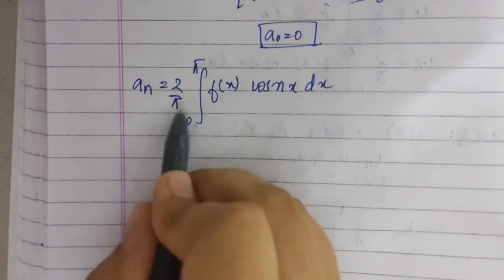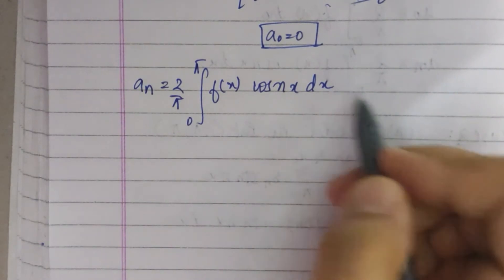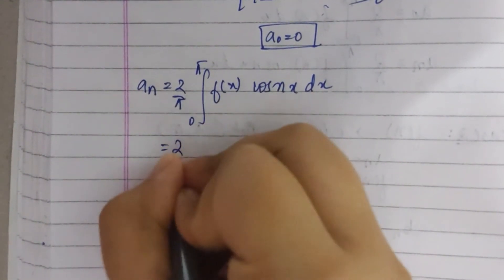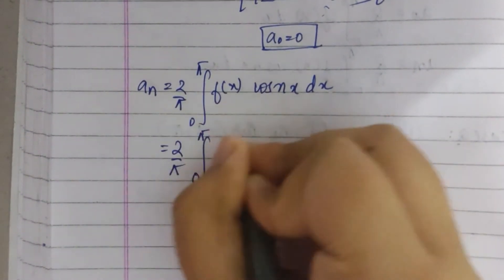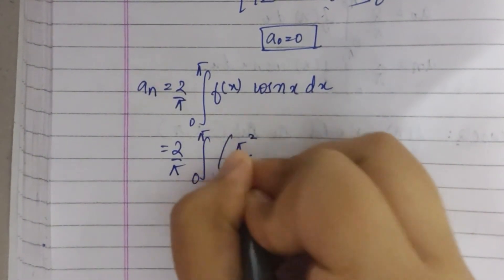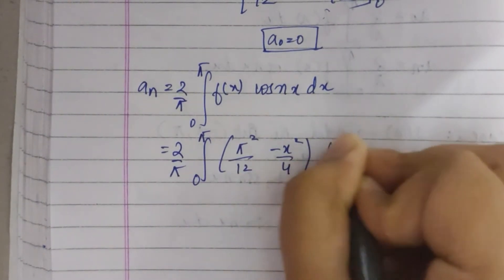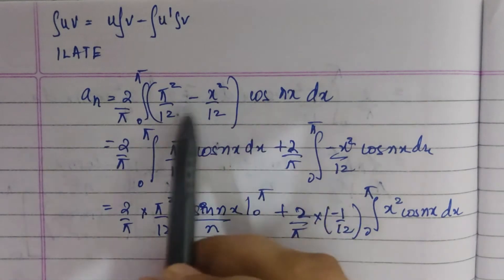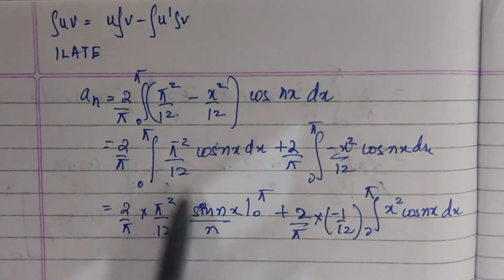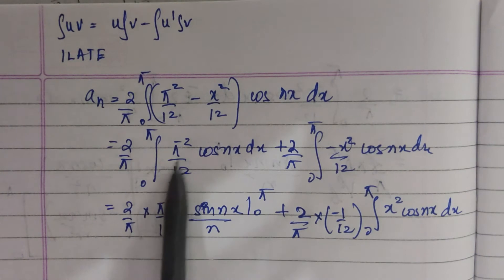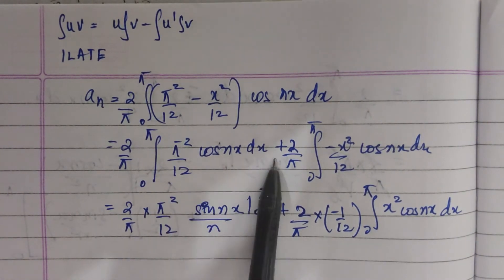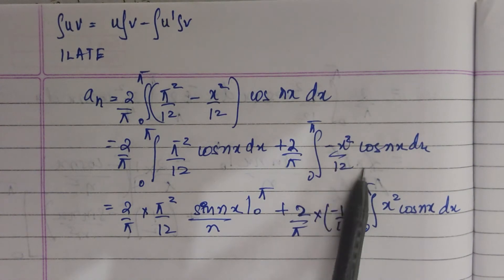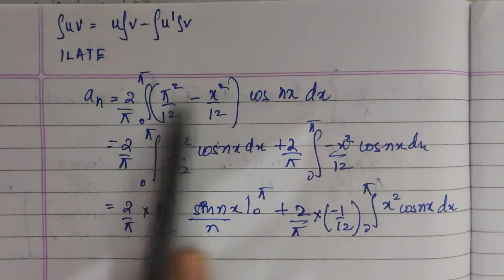Next, a n equals 2 by pi times the integral from 0 to pi of f of x cos nx dx. We substitute the function from 0 to pi: pi squared by 12 minus x squared by 4, multiplied by cos nx dx. Opening the brackets, we get 2 by pi times the integral from 0 to pi of pi squared by 12 cos nx dx, plus 2 by pi times the integral from 0 to pi of minus x squared by 4 cos nx dx.